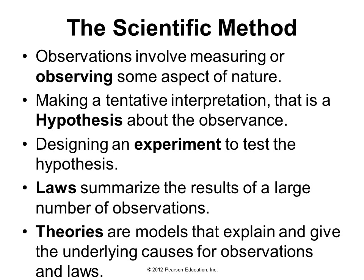In chemistry we use the scientific method, which involves observations — measuring and studying some aspect of nature — and then making a tentative interpretation, that is, we hypothesize about the observations. We design experiments to test the hypothesis. When many observations are carried out repeatedly, a simple hypothesis often turns into a law, which covers a large number of observations. We also have theories, which are models that give an explanation of the underlying causes of what we observe.